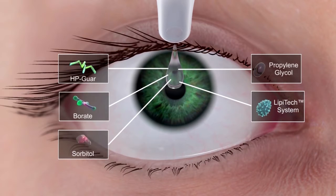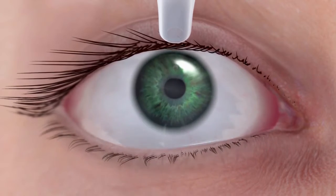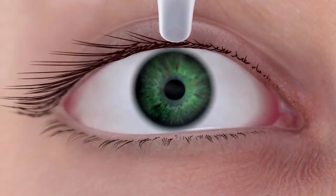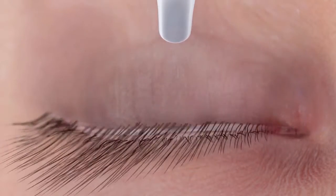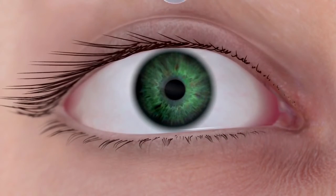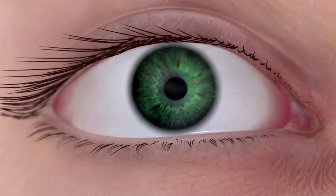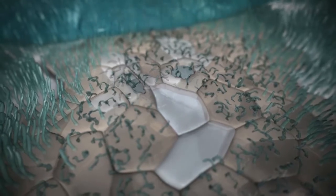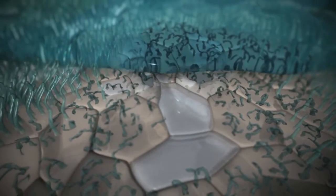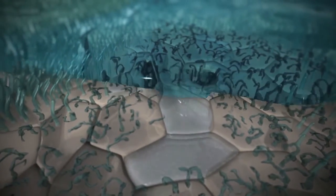Systane Balance Lubricant Eye Drops is designed to restore the lipid layer and the natural tear film. Following application, Systane Balance, with its unique emulsion technology, rapidly spreads across the surface of the eye with minimal haze.